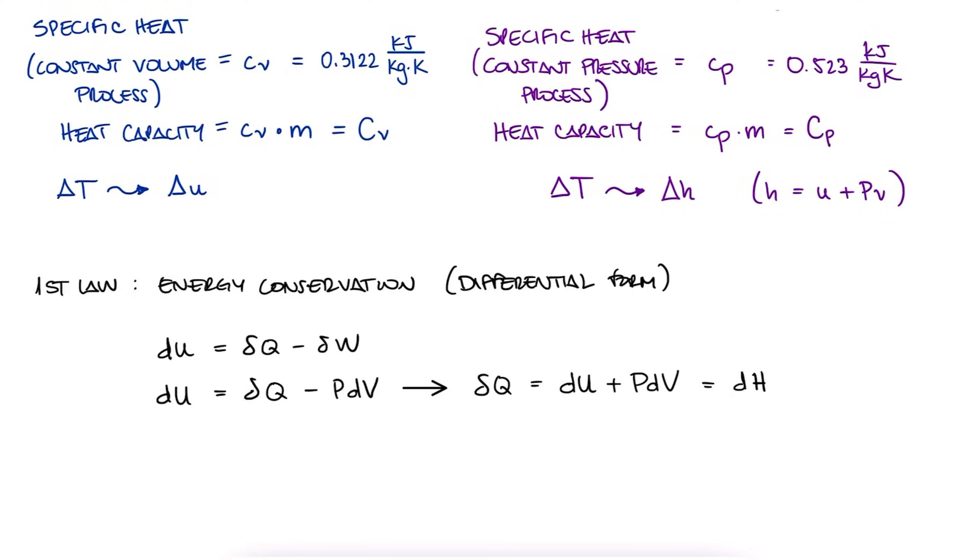Notice that we use the delta letter for changes in values that depend on the path of the process, and just the letter d for changes in values that do not depend on the path of the process. du is always u2 minus u1, regardless of the path of the process, just like dh is h2 minus h1.